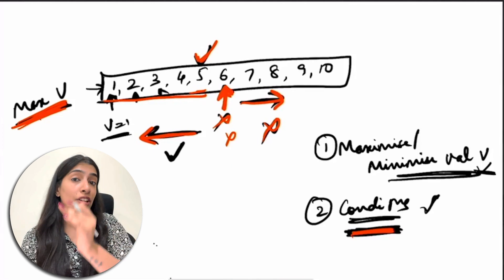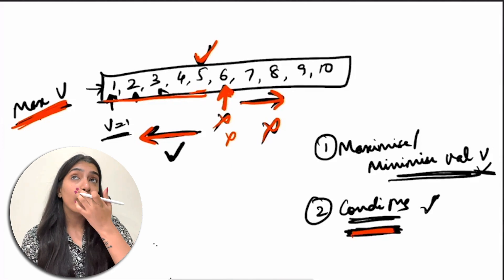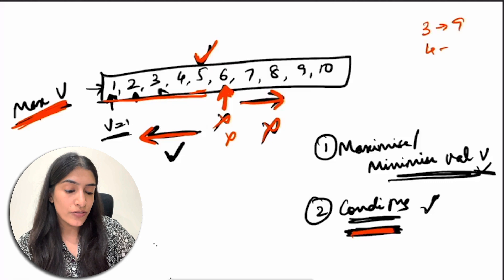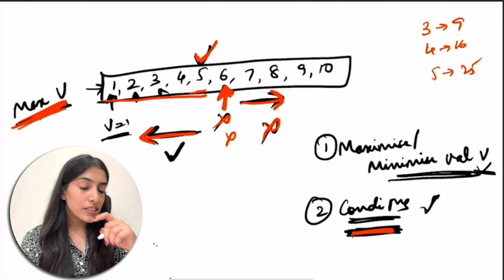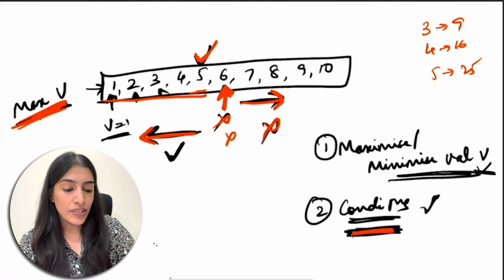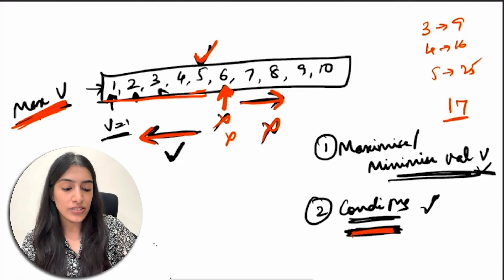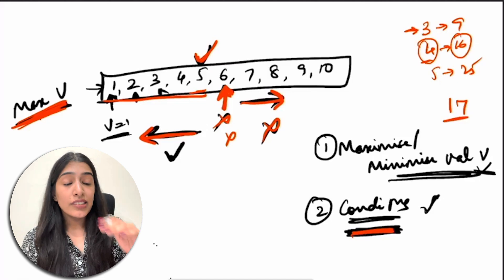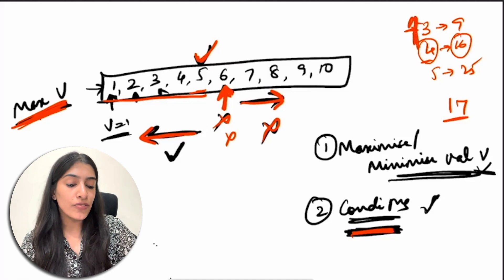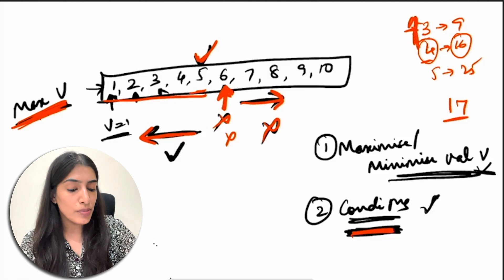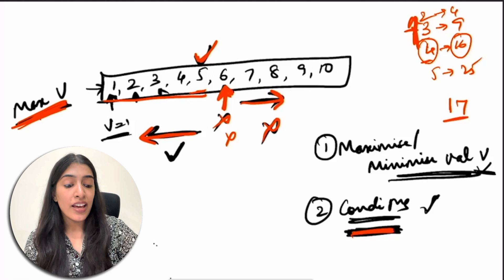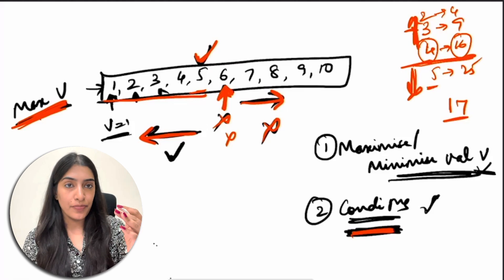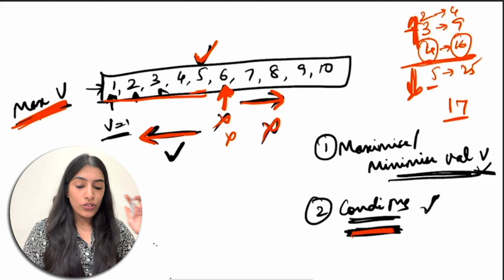The main catch is: if the value of V increases, we know the condition will never be fulfilled; if it decreases, conditions will always be fulfilled. We've seen a similar example before — the square root example. If the square of four is 16 and a condition says the square can never exceed 17, then all values less than four also satisfy that condition, and all values greater than four will not.